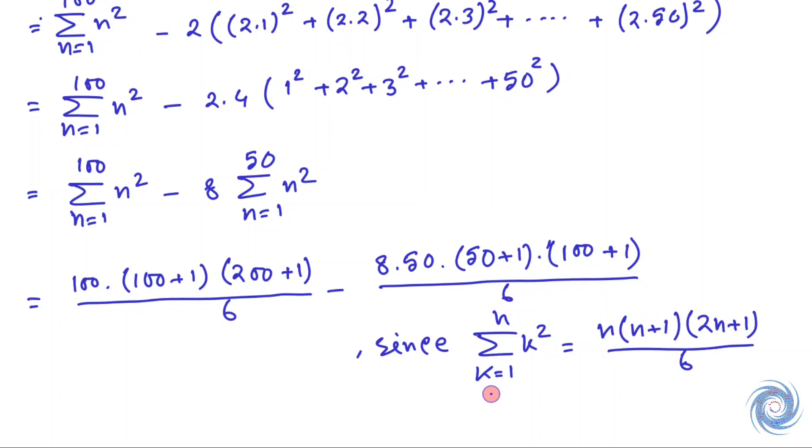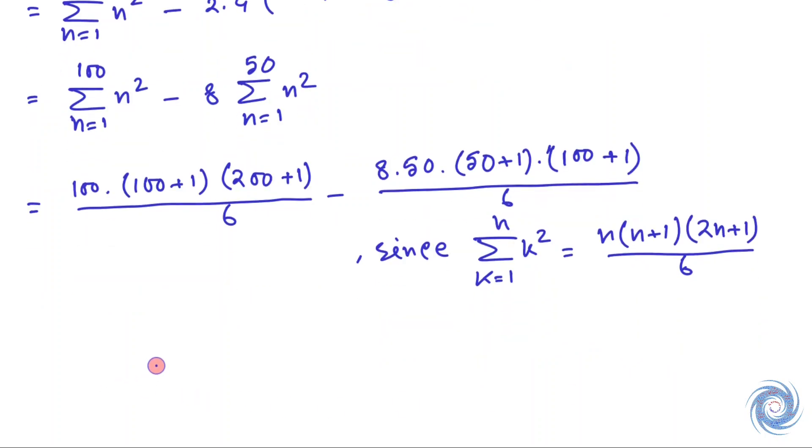Here we have used the following formula: summation of k² where k from 1 to n is given by n times (n+1) times (2n+1) divided by 6.